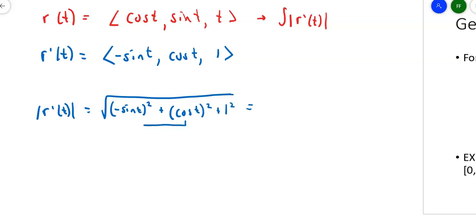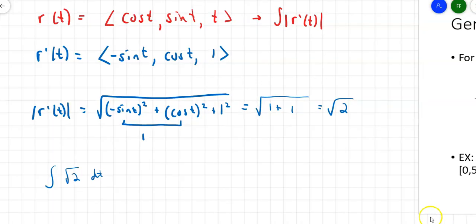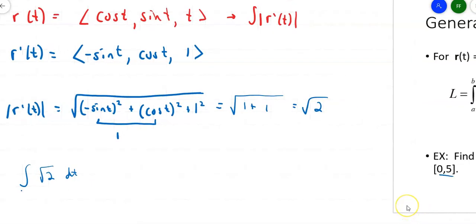Sine squared plus cosine squared gives you 1 — those Pythagorean identities come in handy. So that first piece is 1, plus 1², giving us the square root of 2. Now I need to integrate that magnitude: the integral of √2 with respect to t from 0 to 5. That's just √2 times (5 − 0), so my answer is 5√2. That's the length of the helix on that interval.